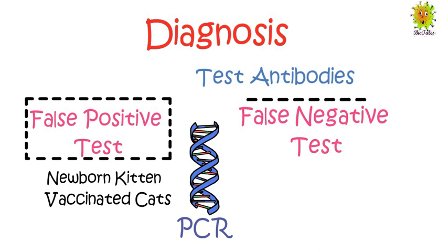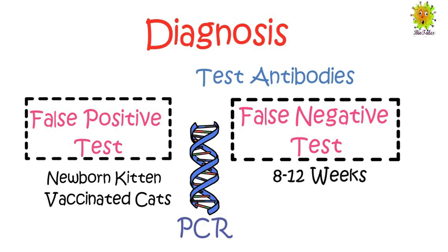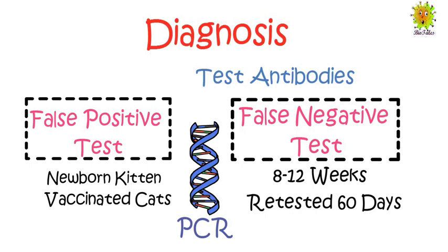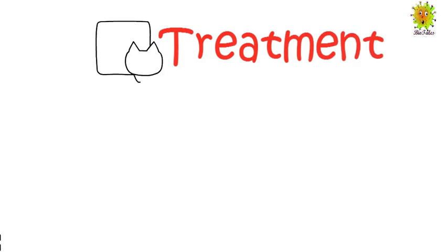Now we see what a false negative test is. Antibodies usually take 8 to 12 weeks to reach a detectable level. Therefore, sometimes a cat is infected but the infection is still at an initial stage, making it difficult to detect. If your cat is bitten by an unknown cat, it should be retested after 60 days to reconfirm the presence of antibodies.